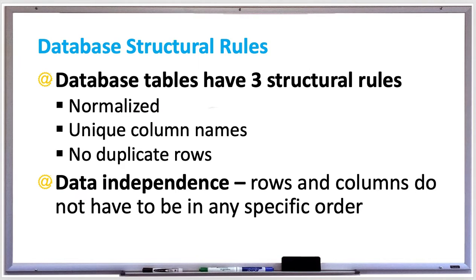Database tables have three structural rules. They need to be normalized, which means a table cannot have multiple values in the same cell. A person cannot have two date of birth values for their date of birth. Unique column names means a table cannot have multiple columns with the same name.